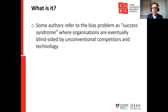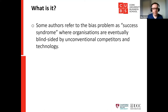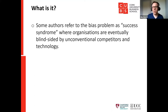Some authors refer to this bias problem as 'success syndrome' — where organisations are eventually blindsided by unconventional competitors and technology. This applies to any organisation. Even in an established industry like banking, you can already see unconventional competitors and new technology appearing. You need ways of looking out for these things so you can react quickly. Some might say they're in a slow-moving industry and don't need to worry as much, but that may be underestimating the pace of change.